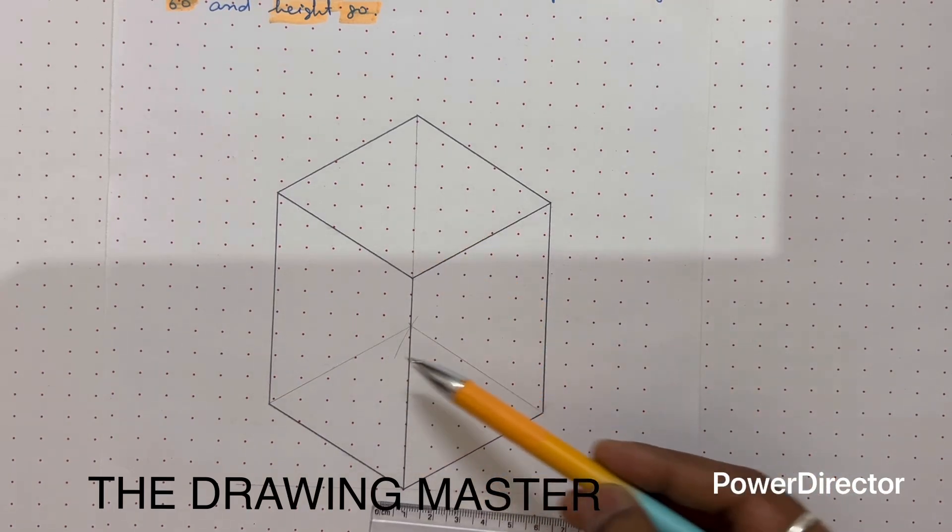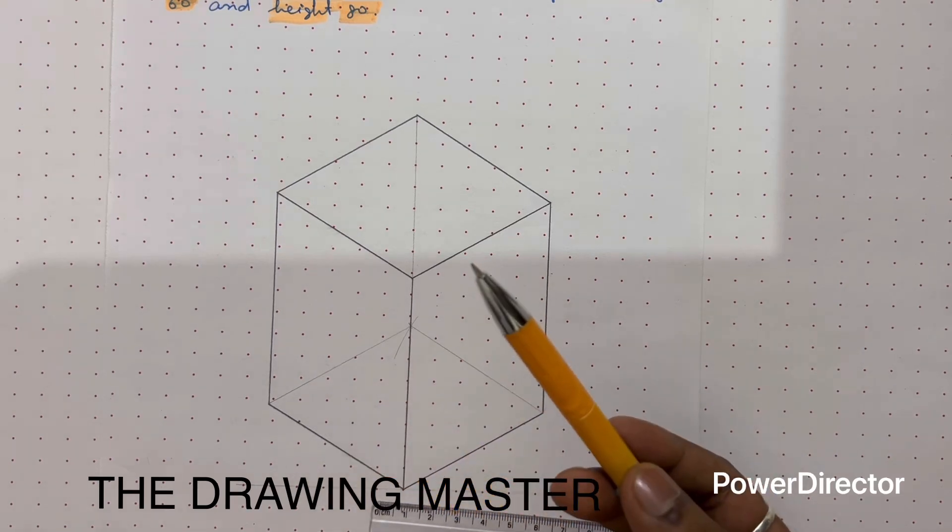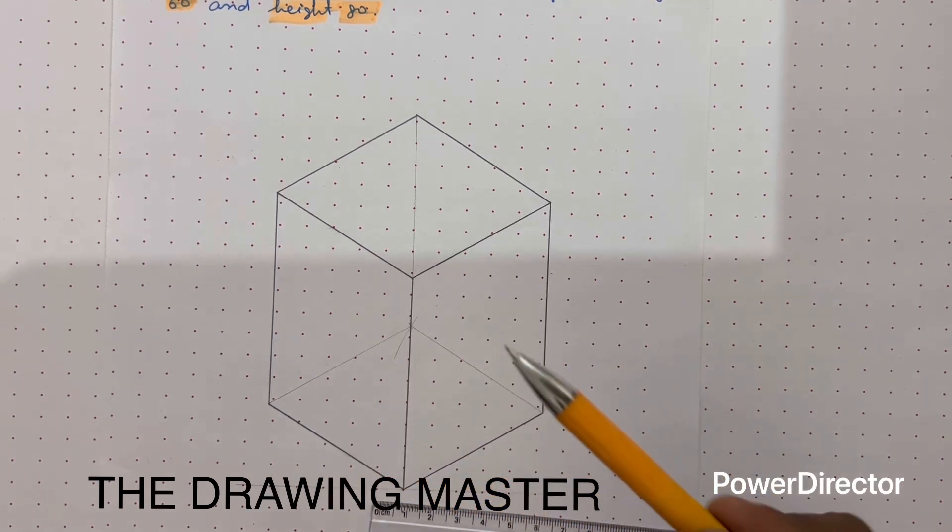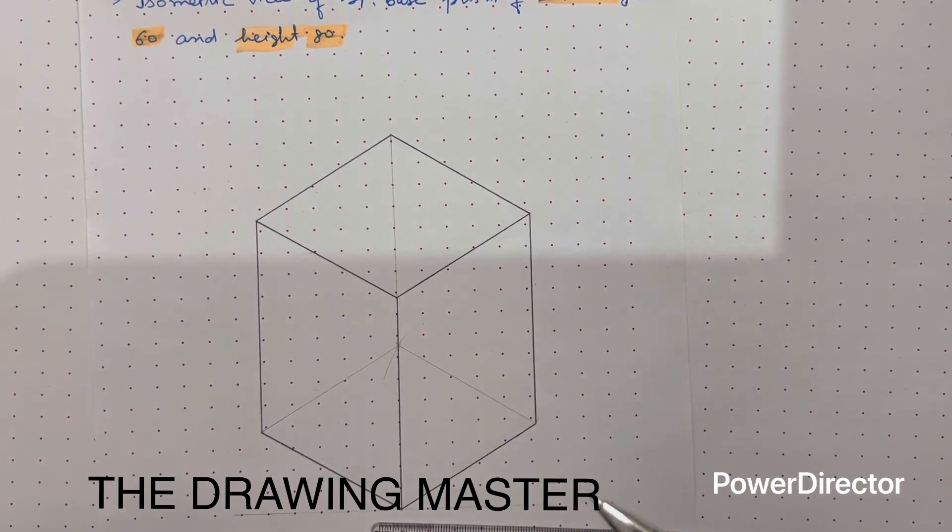So there is no need to erase this line, you can keep this line. Basically these are the hidden edges. In isometric view generally we are not preparing the hidden lines, so you can just keep these lines to show the construction work.